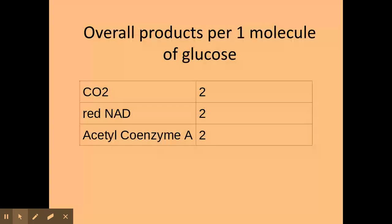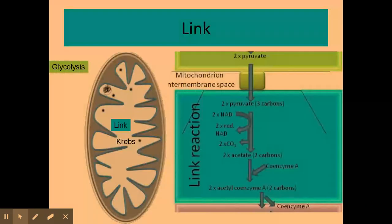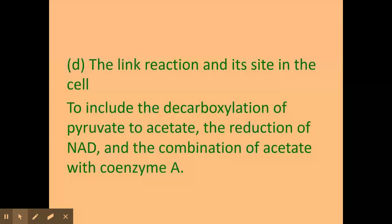You need to be aware of the products per one molecule of glucose. Don't forget that the link reaction occurs twice per one molecule of glucose, because one molecule of glucose is broken down into two pyruvates in glycolysis. Therefore, in the link reaction, you have two lots of CO2, two lots of reduced NAD, and two lots of acetyl coenzyme A produced. That's a summary of what is going on in the link reaction.